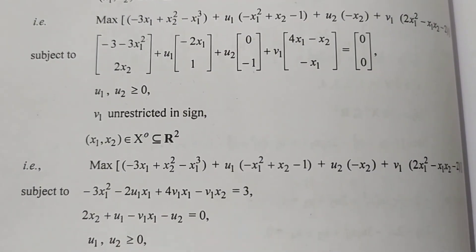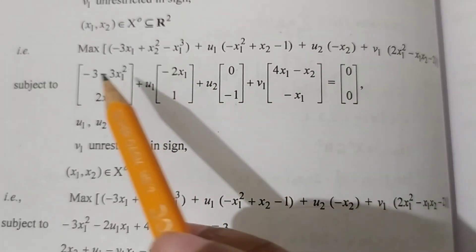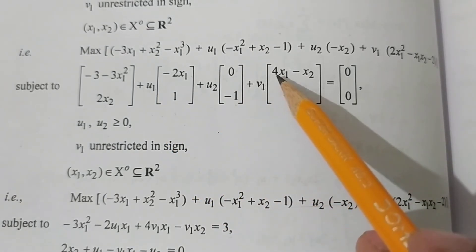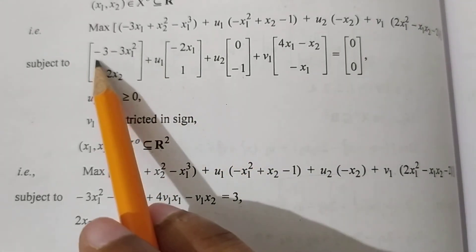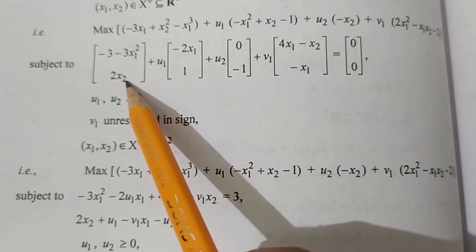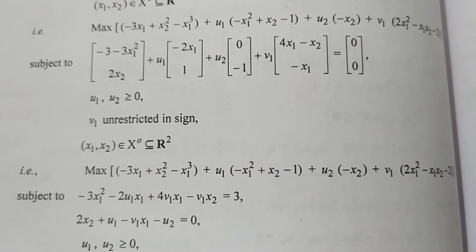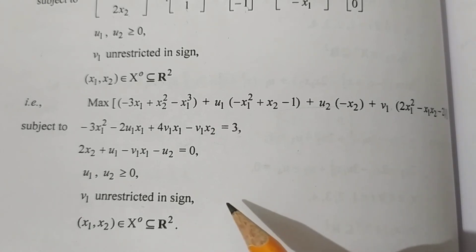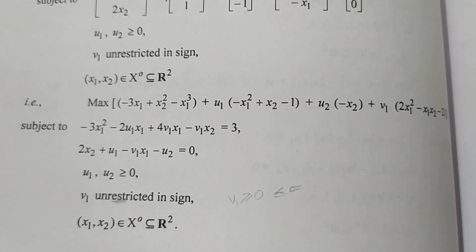Next step में simple equations में लिखा: minus 3x1 square minus 2x1·u1 plus 4x1·v1 minus x2·v1 equal to 3 (negative side पर जाके 3 बन गया)। Similarly: 2x1 plus u1 minus u2 minus v1·x1 equal to 0. Where u1, u2 greater than equal to 0; v1 unrestricted in sign; x1, x2 belong to X, subset of R².